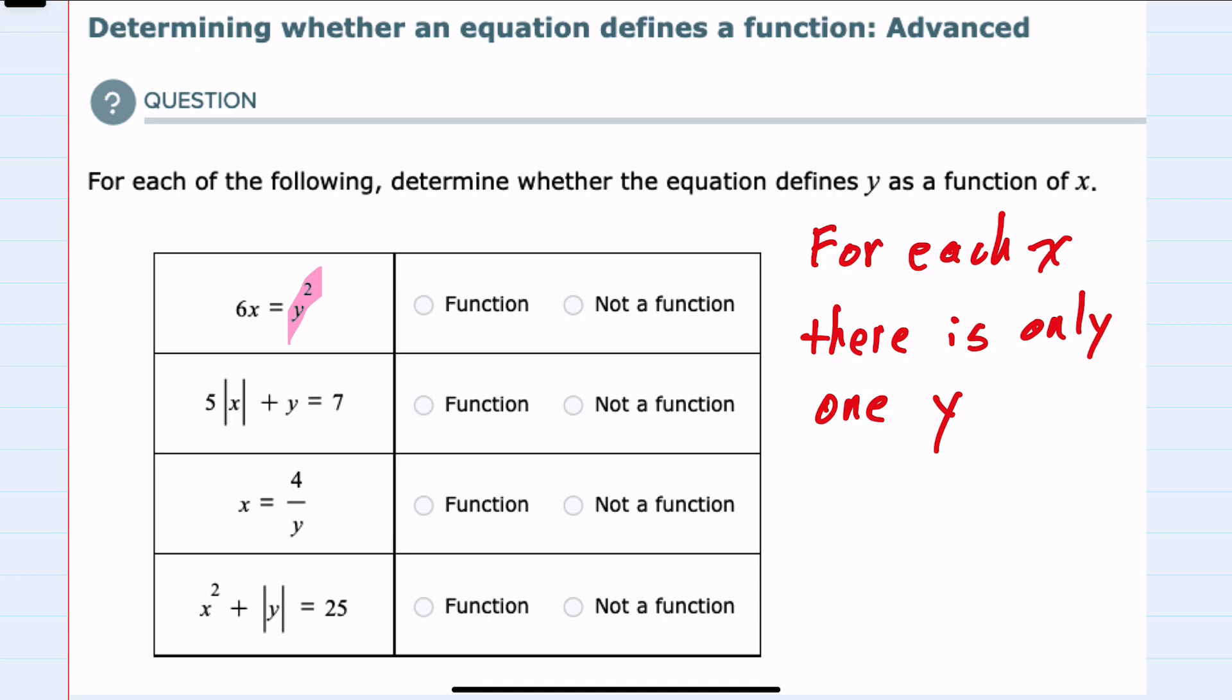For these examples, we can look at the y part of the equation. If we were squaring a y, like in the first example, squaring a positive and squaring a negative value here for y would result in the same thing. So number one is not a function.